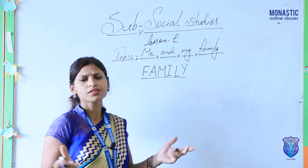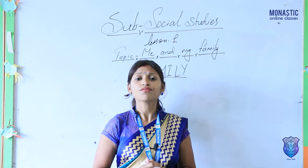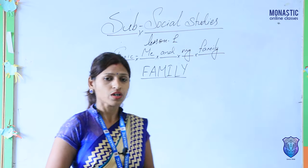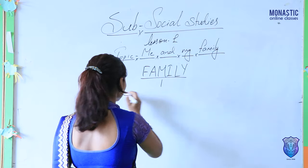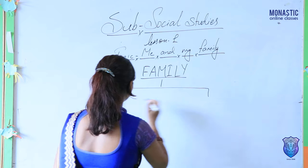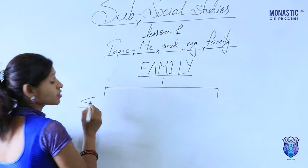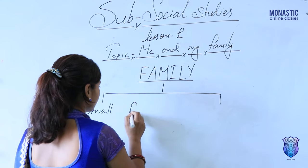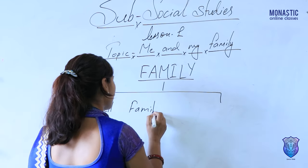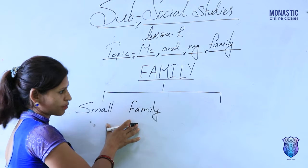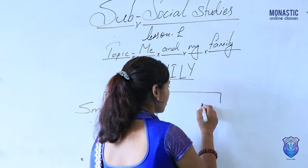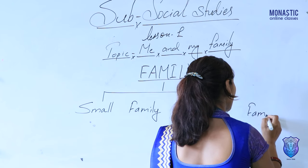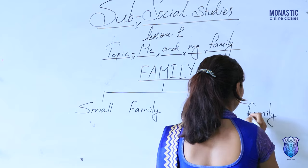There are different types of families in our society. Some families are small and some families are large. The two types are: small family — S-M-A-L-L, family — F-A-M-I-L-Y; and large family — L-A-R-G-E, family — F-A-M-I-L-Y.